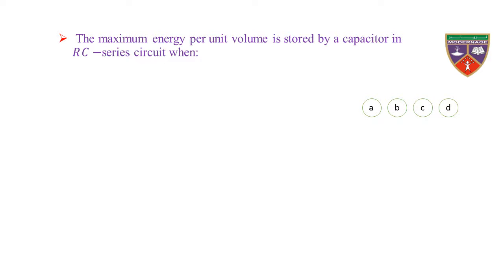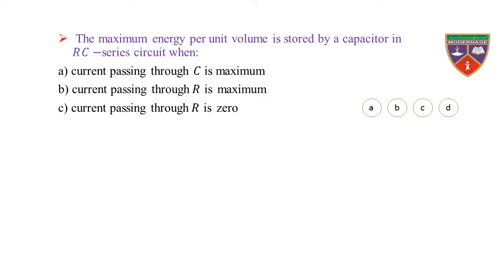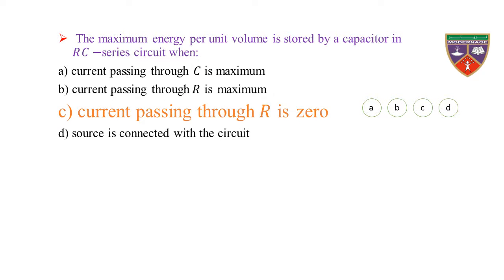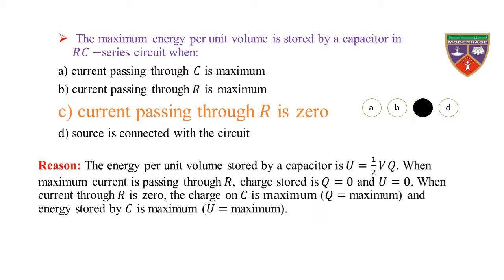The maximum energy per unit volume contained by a charged capacitor in an RC series circuit occurs when — option A: current passing through C is maximum, option B: current passing through R is maximum, option C: current passing through R is 0, option D: source is connected with the circuit. The key is option C. Reason: U = ½V·Q. When maximum current passes through R, Q = 0 and U = 0. When current through R is 0, charge on C is maximum and energy stored by C is maximum.